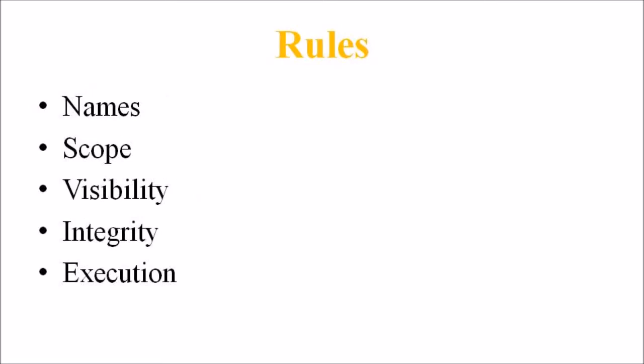Next we are going to discuss the rules. UML has a number of rules so that models are semantically self-consistent and related to other models in the system harmoniously. UML has semantic rules for names, scope, visibility, integrity and execution.